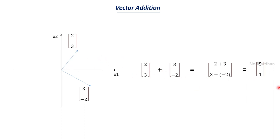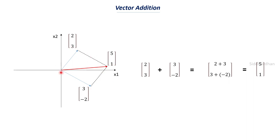You can also get the resultant addition graphically. Take the two vector points, draw dotted lines from each to form a rectangle, then join the diagonal from the origin to the opposite corner — that diagonal is the resultant addition of the two vectors. The value of that diagonal point is 5,1, matching our mathematical result. So you can find vector addition either mathematically or graphically.